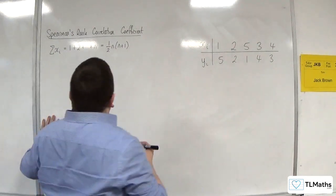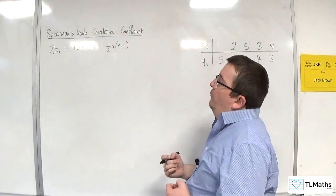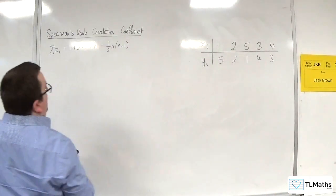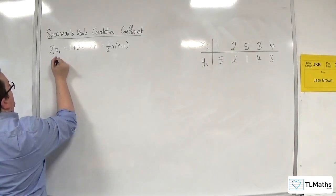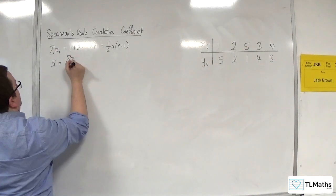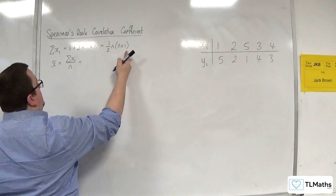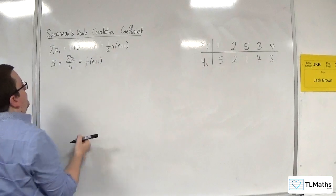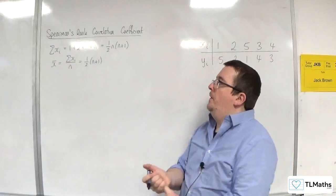So that's the first thing. From that, we're also going to consider X̄ and what that would represent. X̄ would be the mean of the ranks, so X̄ would be the sum of all your Xᵢs divided by how many there are, N. So it would be ½N(N+1) divided by N, giving us just ½(N+1).